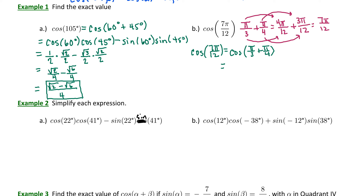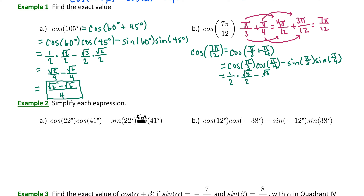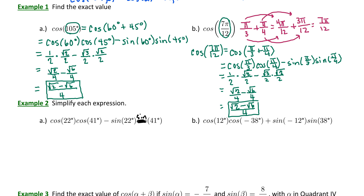Using the cosine of a sum identity, we have cosine(π/3) times cosine(π/4) minus sine(π/3) times sine(π/4). Cosine(π/3) is 1/2 and cosine(π/4) is √2/2. Multiplying the fractions gives √2/4 minus √6/4. Notice this is the same result as part A, because 7π/12 is 105 degrees — we were working the same problem once in degrees and once in radians.